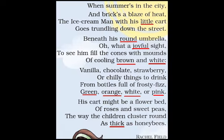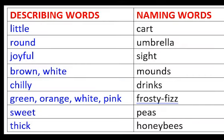Now underline all the describing words in the poem Ice Cream Man. Little cart — here little is the describing word describing the size of the cart. Round umbrella — round is the describing word describing the shape of the umbrella. Brown and white mounds — brown and white are the colors of the mounds, so they are the describing words. Chili drinks — chili is the describing word describing the nature of the drink. Green, orange, white, pink — these are describing words describing the colors of the frosty fizz. Sweet peas — sweet is the describing word describing the taste. Thick honeybees — thick is the describing word describing the size of the bees.